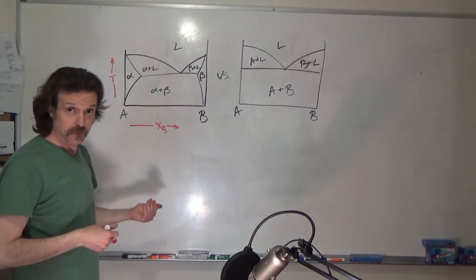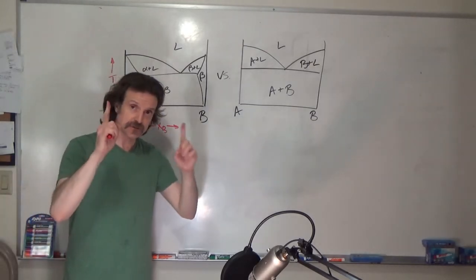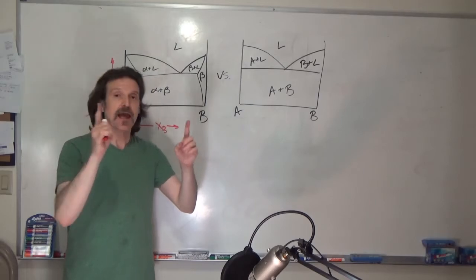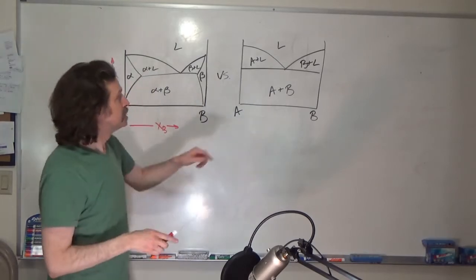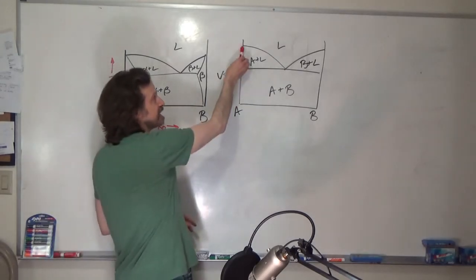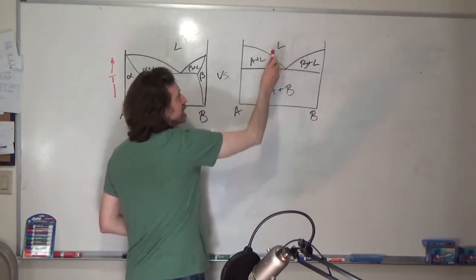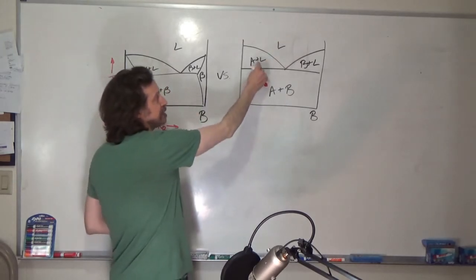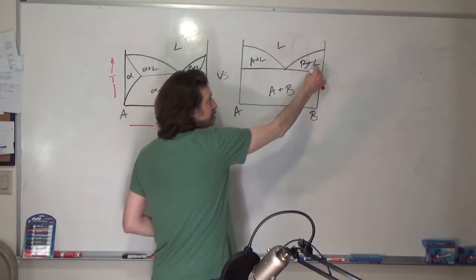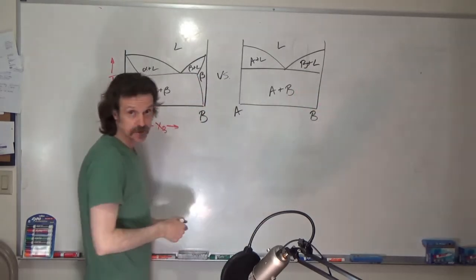As before, any time you have two single-phase regions, there has to be a two-phase region between them. So this is A, this is liquid, therefore we have to have an A plus liquid region, a B plus liquid region, and an A plus B region.